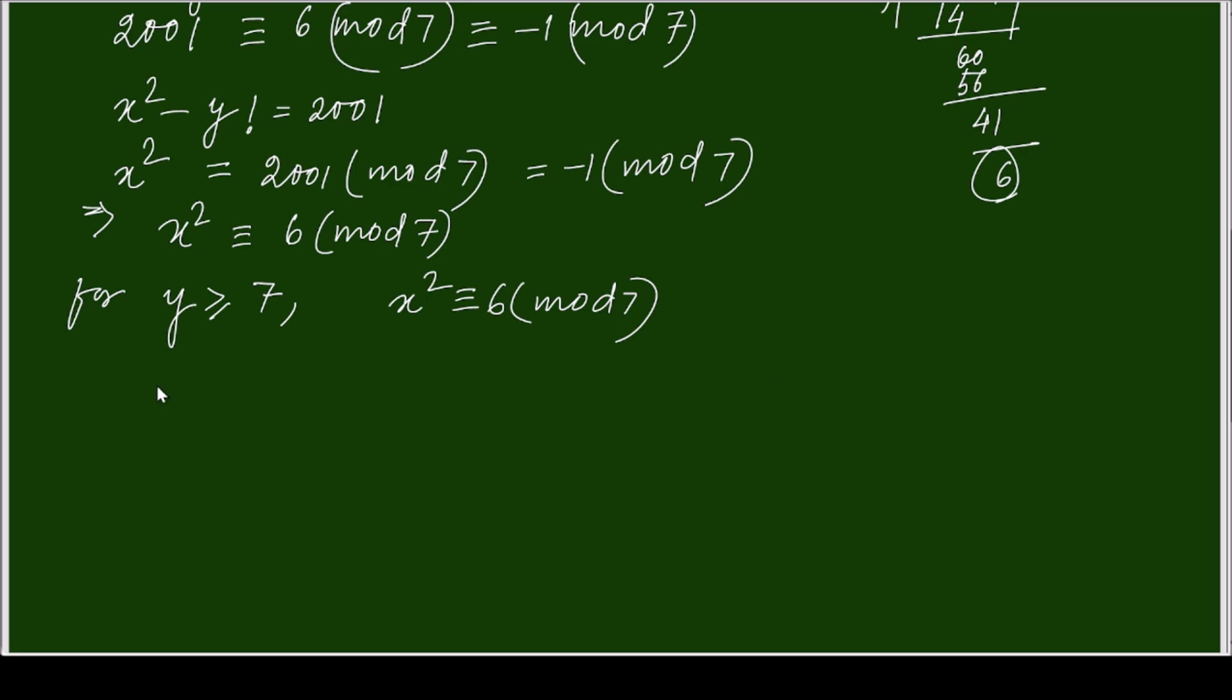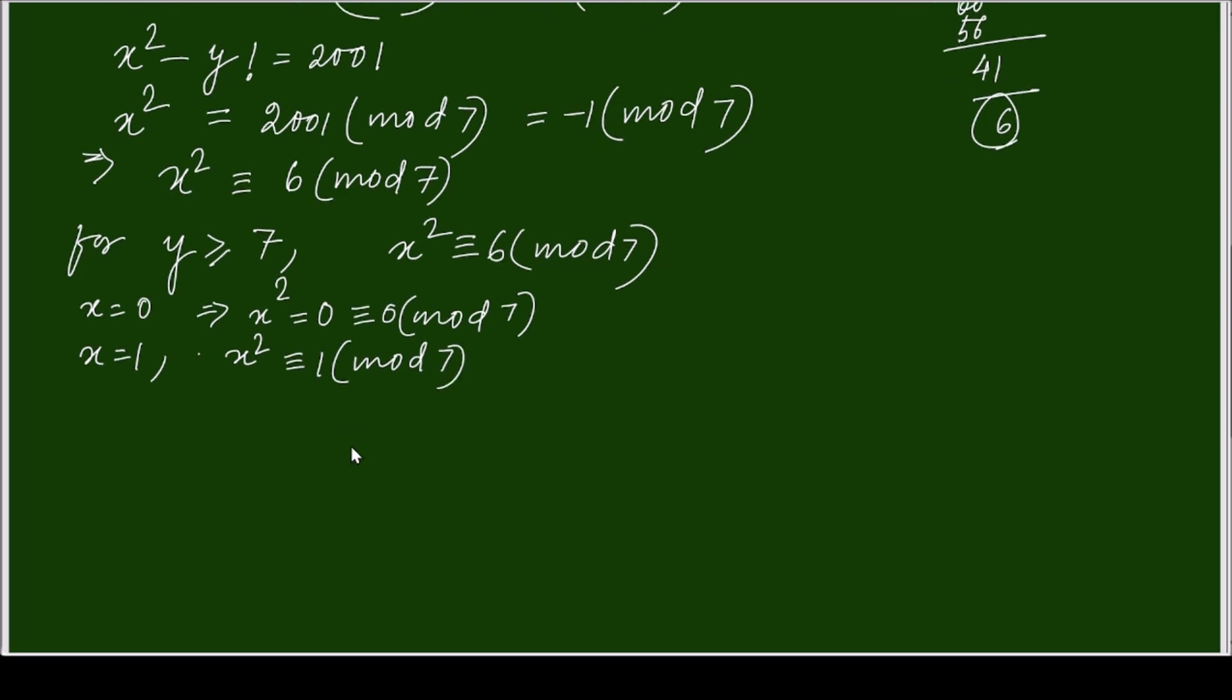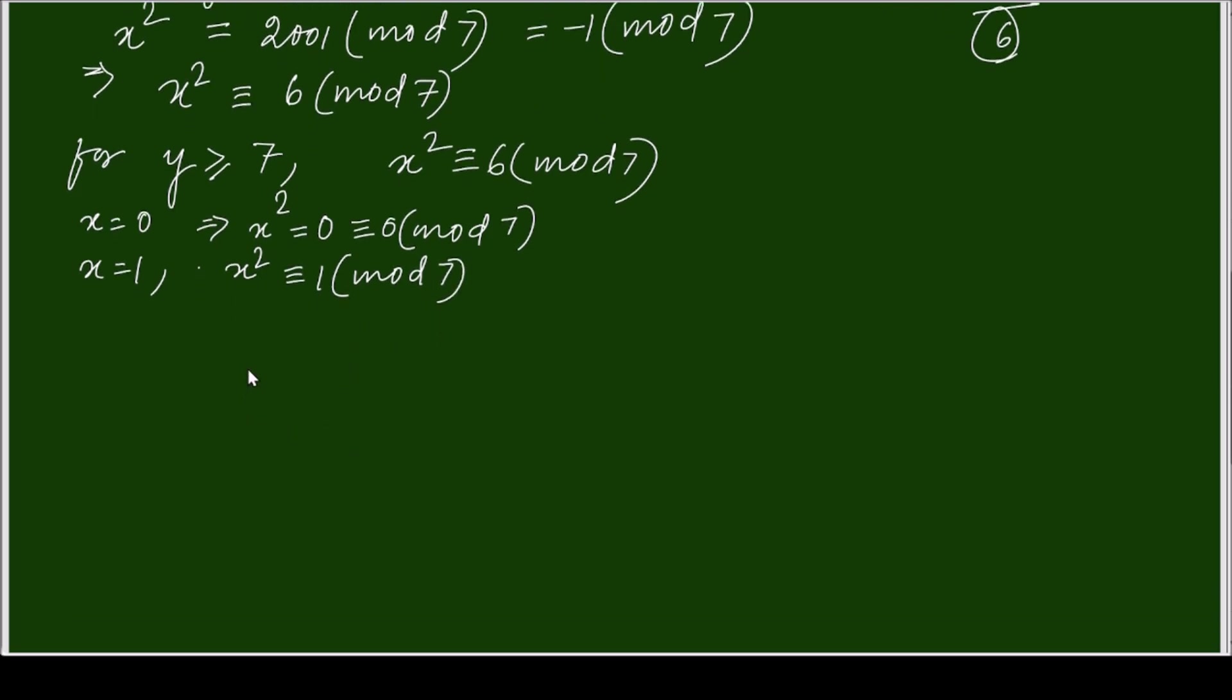So if I are taking x equals to 0, that means x square equals to 0, that is congruent to 0 modulo 7. If x is 1, then x square is congruent to 1 modulo 7. I am analyzing each and everything so that it will be more clear.